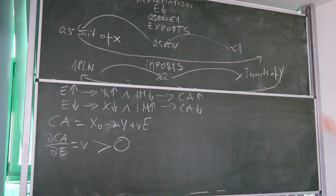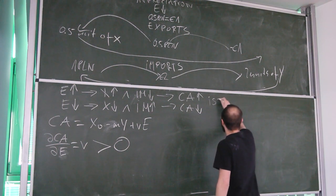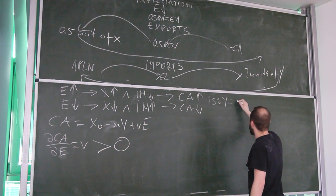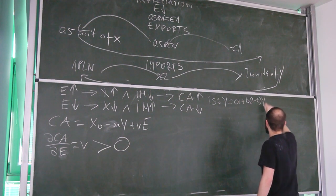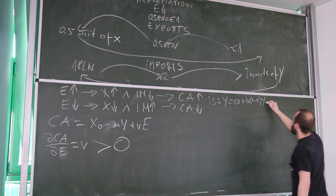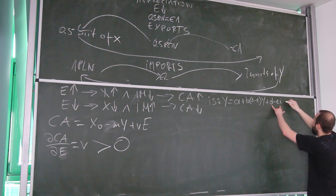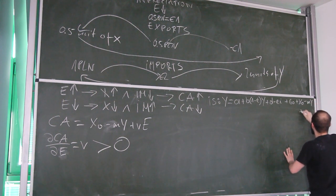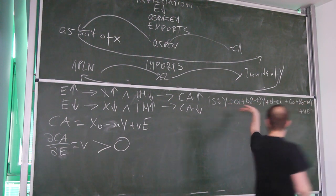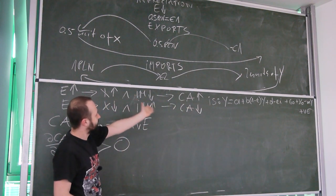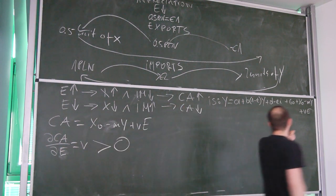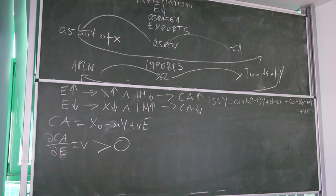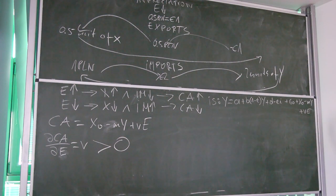Let's put all the information together. We have: Y equals a plus b(1−t)Y — consumption — plus d minus e·i — investment — plus G₀, plus the current account which is autonomous exports minus m times Y plus v times E. This IS function gives us all combinations of income and interest rate for which there is equilibrium in the goods and services market, now augmented to incorporate the open economy.